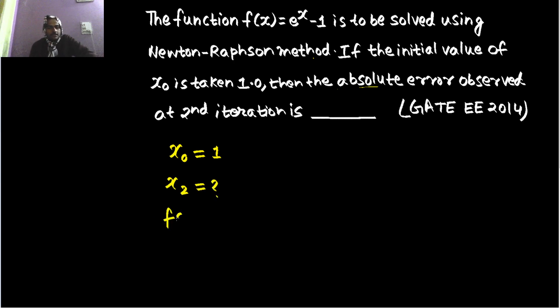So function is e^x minus 1. Because Newton-Raphson we are using, we need the derivative also, which will come out to be e^x. Now, because they are asking absolute error, we can solve normally finding a root of e^x minus 1.